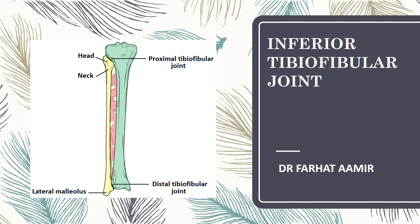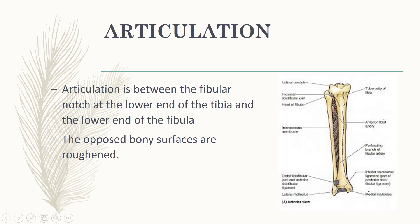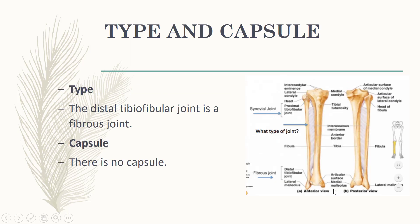Today we will discuss the inferior tibio-fibular joint, also named as the distal tibio-fibular joint. As the name indicates, it is between the inferior or distal ends of the tibia and fibula. The articulation is between the fibular notch at the lower end of the tibia and the lower end of the fibula. The opposed bony surfaces are roughened.